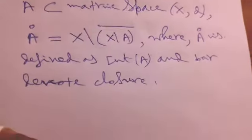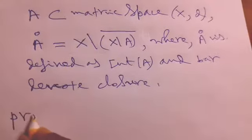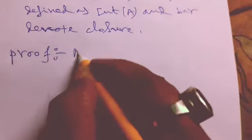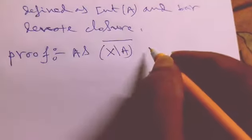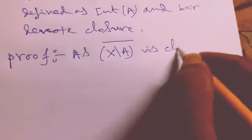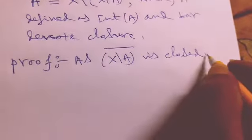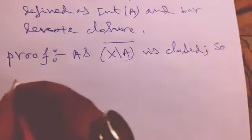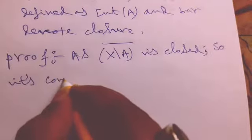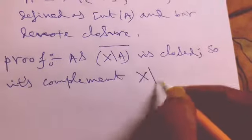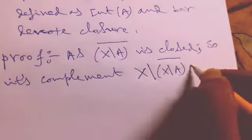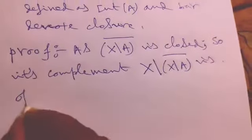Now we have to prove this result. Taking the first part of the proof: X minus A-closure is closed, so its complement, X minus of (X minus A-closure), is open. This is clear, as we know the complement of any closed set is an open set.